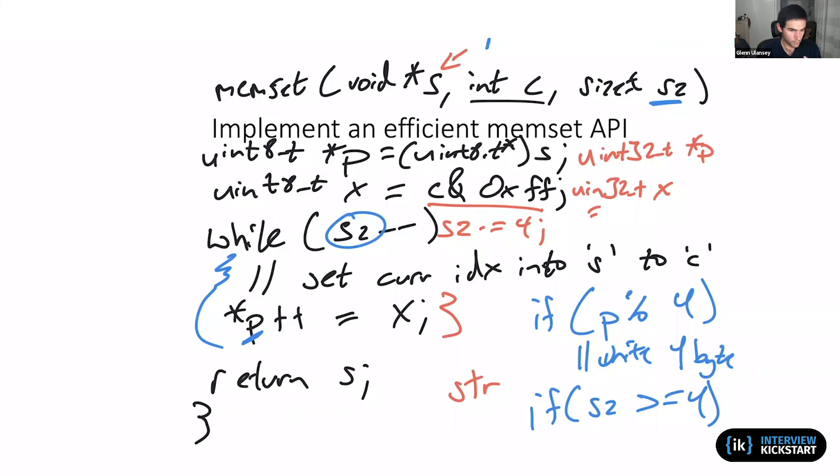In an interview, totally reasonable for someone to ask you to implement memset. My typical suggestion would be: okay, let's start off with just this basic one byte at a time implementation. Maybe doing it in pseudocode, maybe doing it in real code - it's not that many lines of code so it shouldn't take more than a couple minutes to actually write it. But along this time, mention to the interviewer: I see how this isn't optimal, here's how I would optimize it, would you like me to write the code to optimize it?